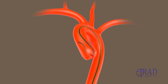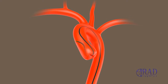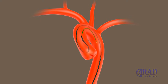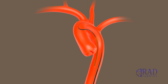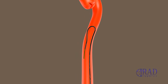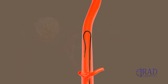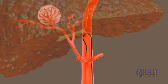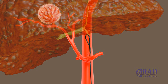Then, a long segment of the wire is re-advanced out of the catheter's tip, and this combination is pulled down to the level where the celiac trunk goes off of the aorta. At this point, the wire is pulled back until only one centimeter is left out of the catheter's tip, and this combination is used to select the celiac trunk.